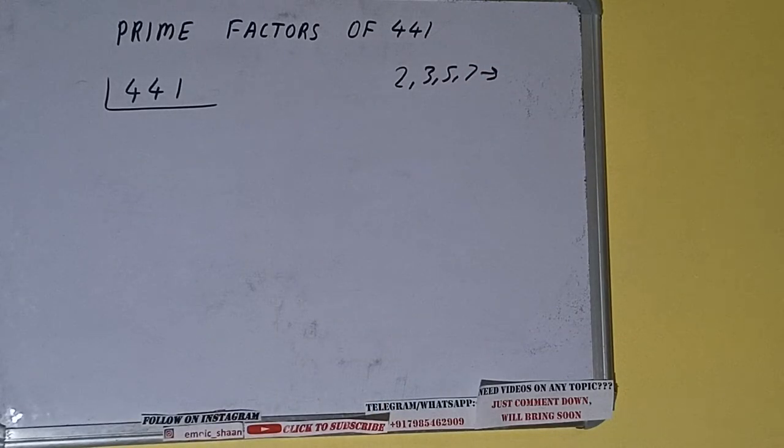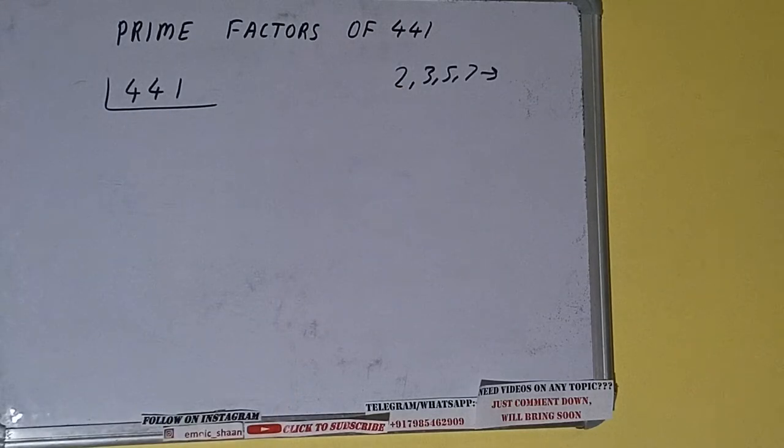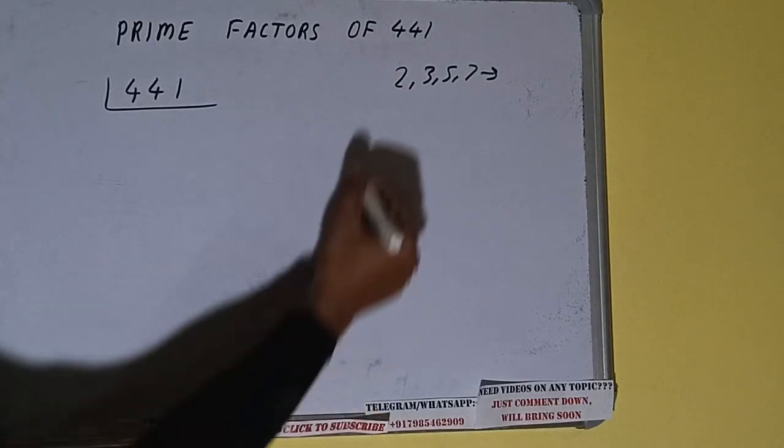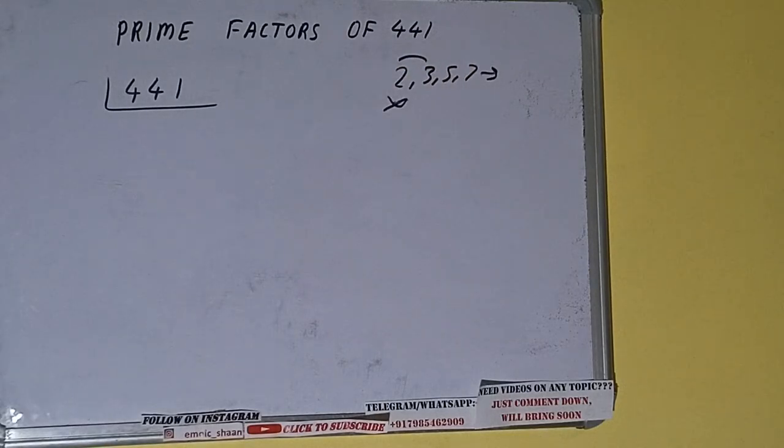We'll be checking with the lowest prime number we have, that is 2. Is the number 441 divisible by 2? Clearly not, because the number is odd. So we'll be checking with the next lowest prime number, that is 3.